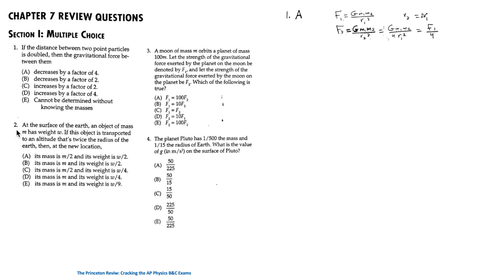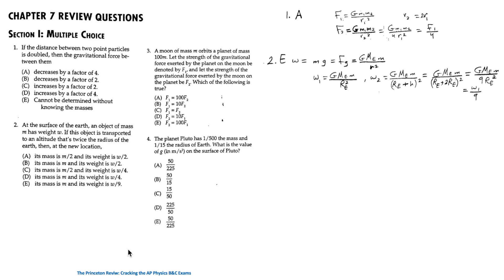For question 2: at the surface of the earth, an object of mass m has weight w. If this object is transported to an altitude twice the radius of the earth, the answer is E — the mass remains m, but the weight becomes w/9.